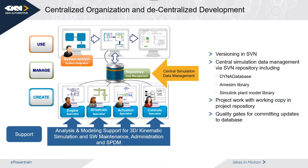Here we have more details about the organization. There is not a single department with all capabilities for all kinds of systems, so we rely on specialist teams for e-motor, clutch actuation, and so on. We have a system for quality gates which ensures that models work together and reuse is given. The central version control system we use is SVN, supplemented by tools like the Dana database, MSM library, and the Simulink model library.